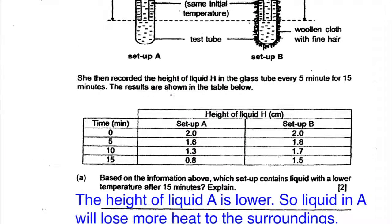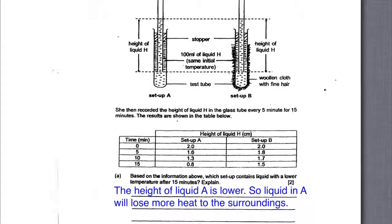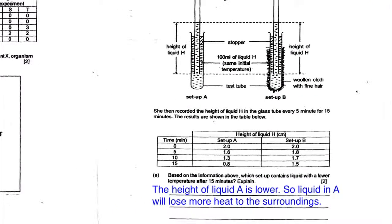The next question asks: based on the information, which liquid will have a lower temperature after 15 minutes? According to the diagram, there are two test tubes. Outside, there is a wooden cloth with fine hair. What does a wooden cloth with fine hair do to the test tube?